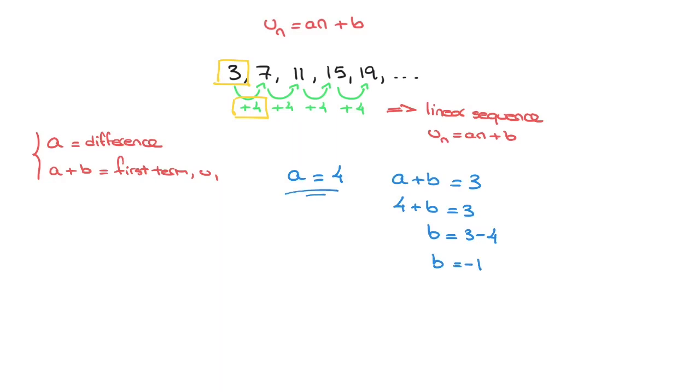Now that we have the values of each of the two coefficients, a and b, we can write this sequence's formula. And that would be un equals to 4n minus 1. And we're done. That's the sequence's formula.